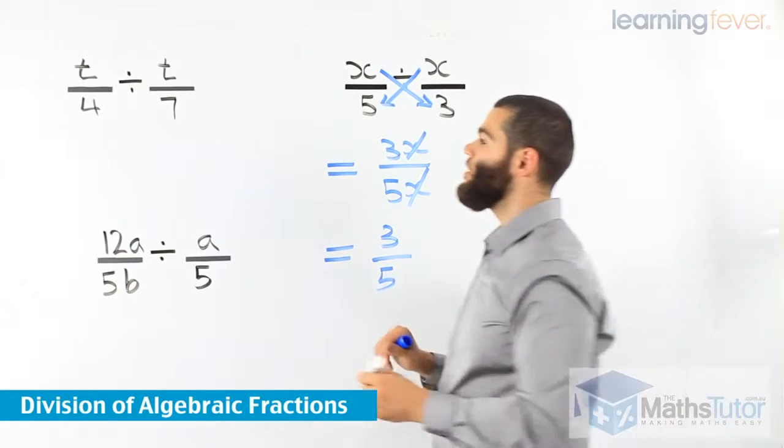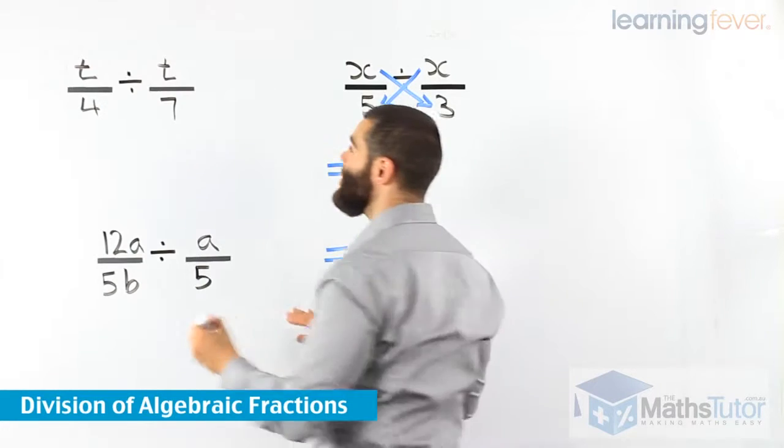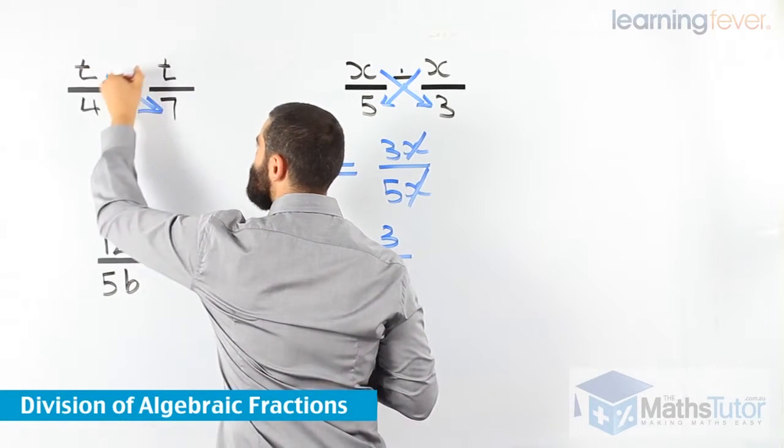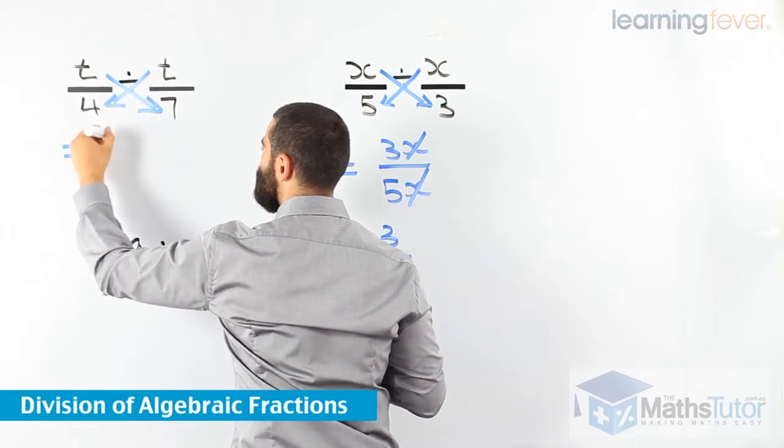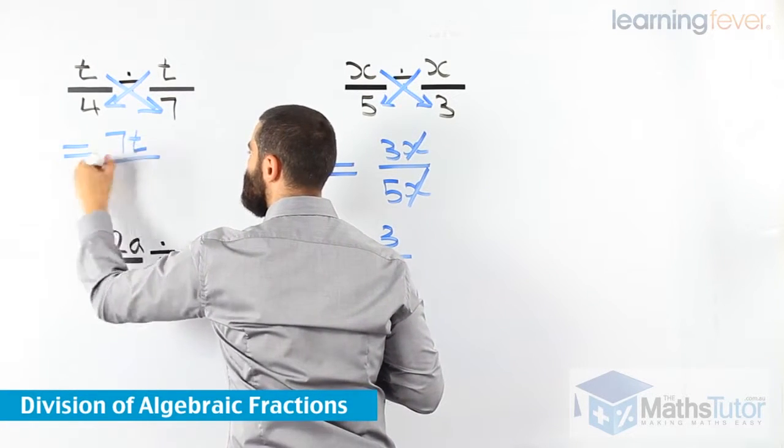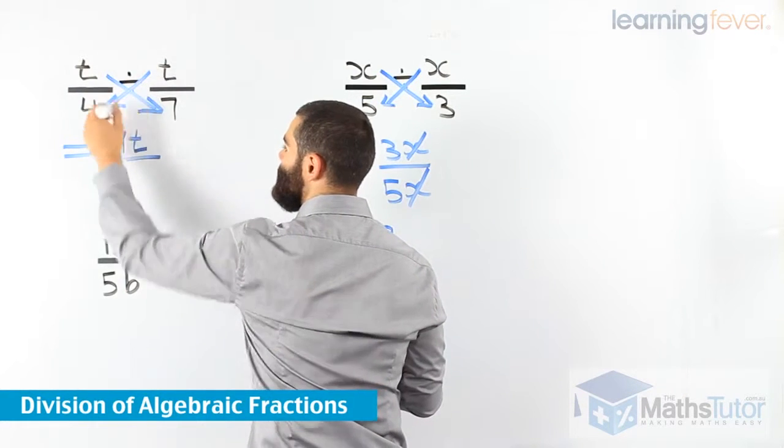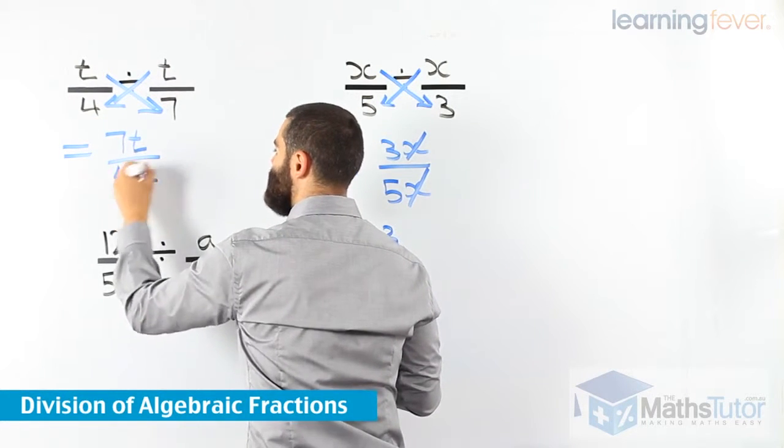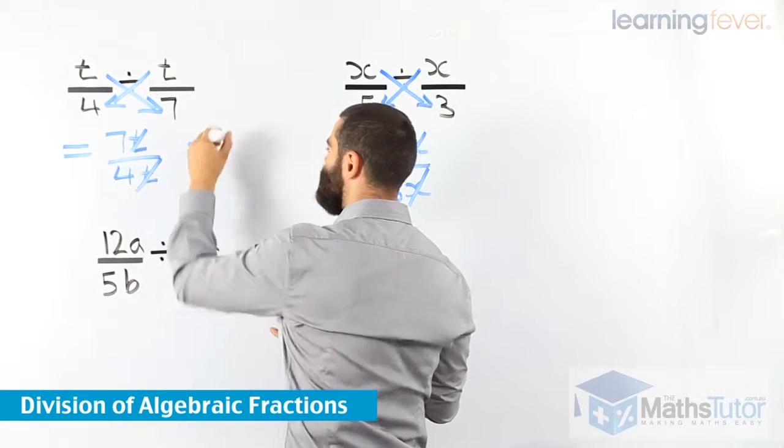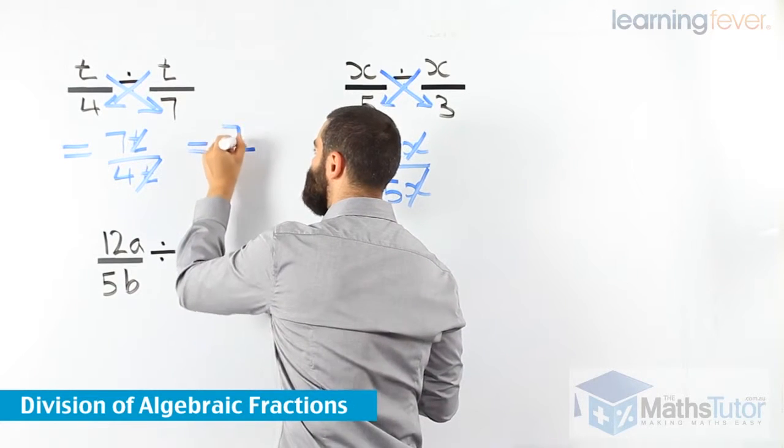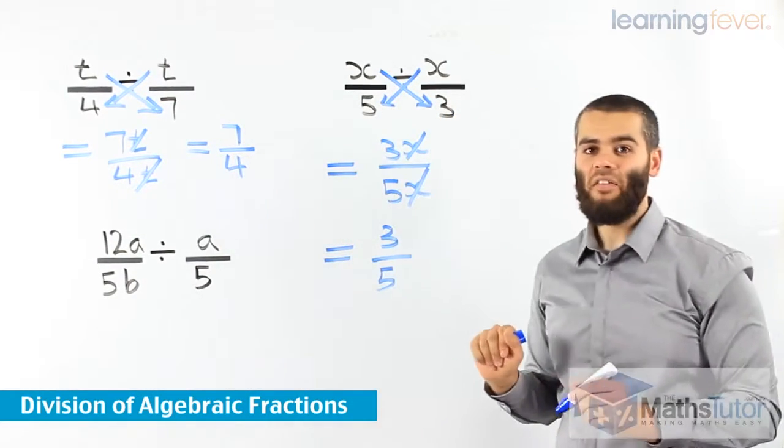Next one. We know t over 4 divided by t over 7. Once again, we are multiplying t times 7, 7t, over t times 4, 4t. Again, we notice we can simplify. The t's divide and they cancel out. 7 over 4. That's our answer there.